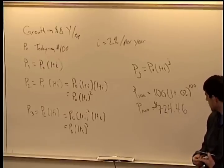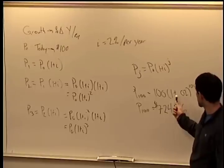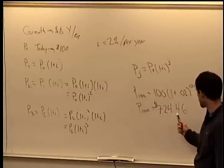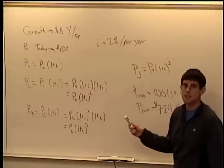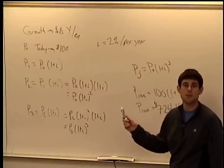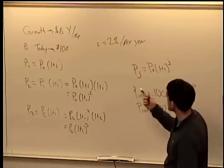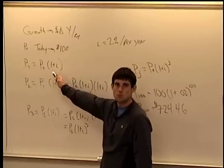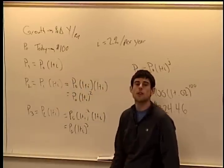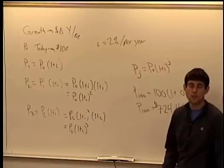So if you hold on for 100 years, your $100 turns into $724.46. Compounding growth leads to big differences over time — even small differences in growth rates can lead to big differences. Over one year, 2% versus 3% interest is only a $1 difference on $100.